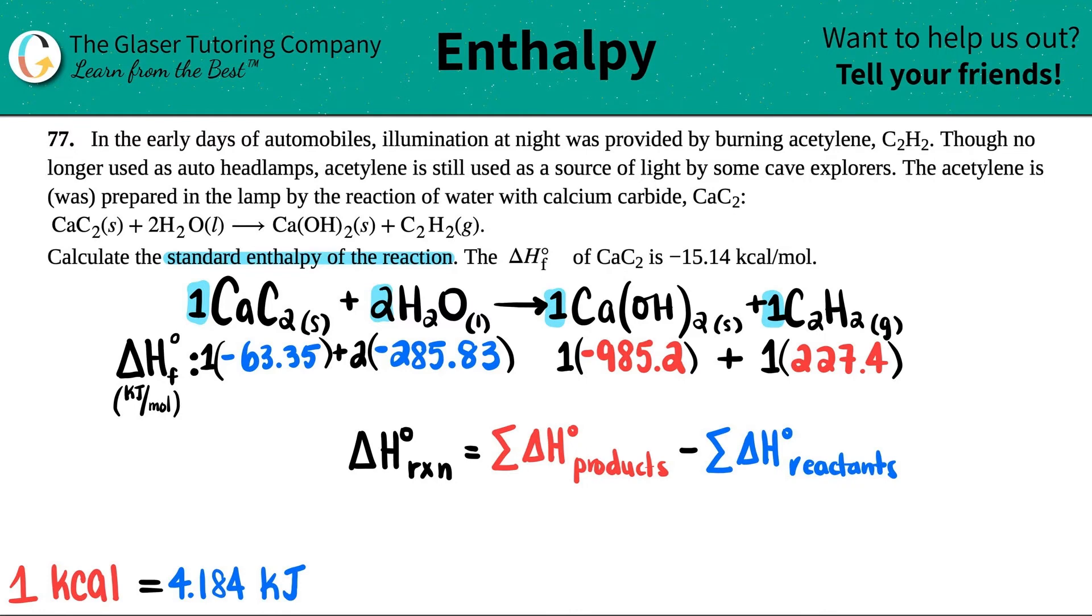All right, let's get one number for the left and one number for the right side. So negative 63.35 plus 2 times negative 285.83. So I get negative 635.01 for the left-hand side. And then negative 985.2 plus 227.4. I get a negative 757.8 for the right-hand side.